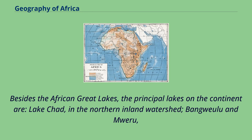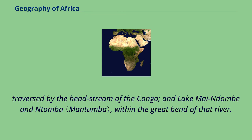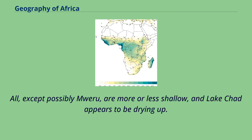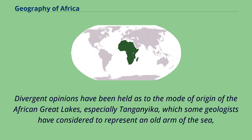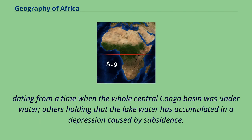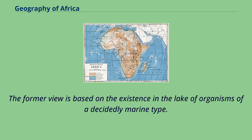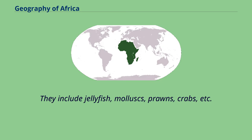Besides the African Great Lakes, the principal lakes on the continent are Lake Chad in the northern inland watershed, Bangweulu and Mweru, traversed by the headstream of the Congo, and Lake Mai-Ndombe and Tumba within the great bend of that river. All, except possibly Mweru, are more or less shallow, and Lake Chad appears to be drying up. Divergent opinions have been held as to the mode of origin of the African Great Lakes, especially Tanganyika, which some geologists have considered to represent an old arm of the sea, dating from a time when the whole central Congo basin was underwater, others holding that the lake water has accumulated in a depression caused by subsidence. The former view is based on the existence in the lake of organisms of a decidedly marine type, including jellyfish, mollusks, prawns, crabs, etc.